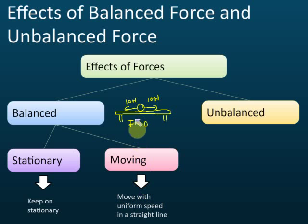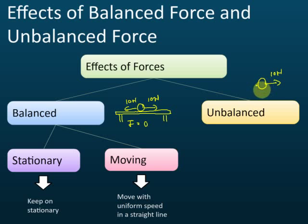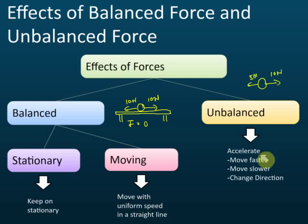Now, how about unbalanced force? Unbalanced force means the forces are not equal — for example, 10 newtons to the right and 5 newtons to the left. The net force equals 10 minus 5, which is 5 newtons — not equal to zero. The effect of unbalanced force is that the object will accelerate. If the net force is not equal to zero, the object must accelerate.